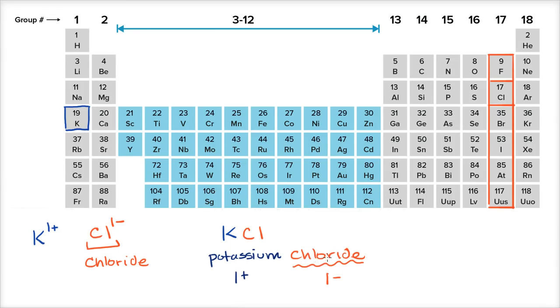You could refer to it other ways, various ways, but this is potassium chloride. You have a positively charged potassium, and you have a negatively charged chlorine, which we would call a chloride.